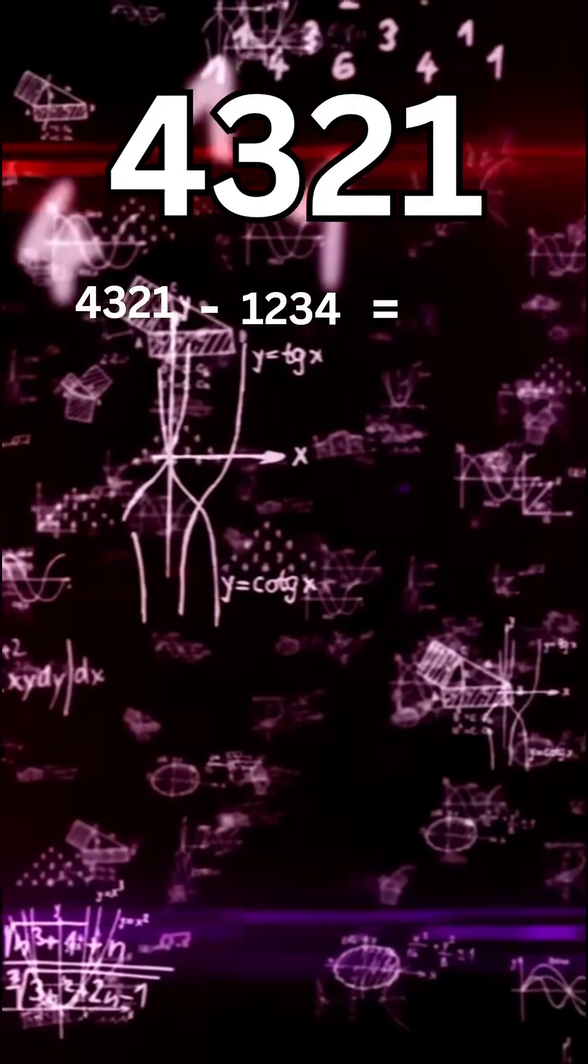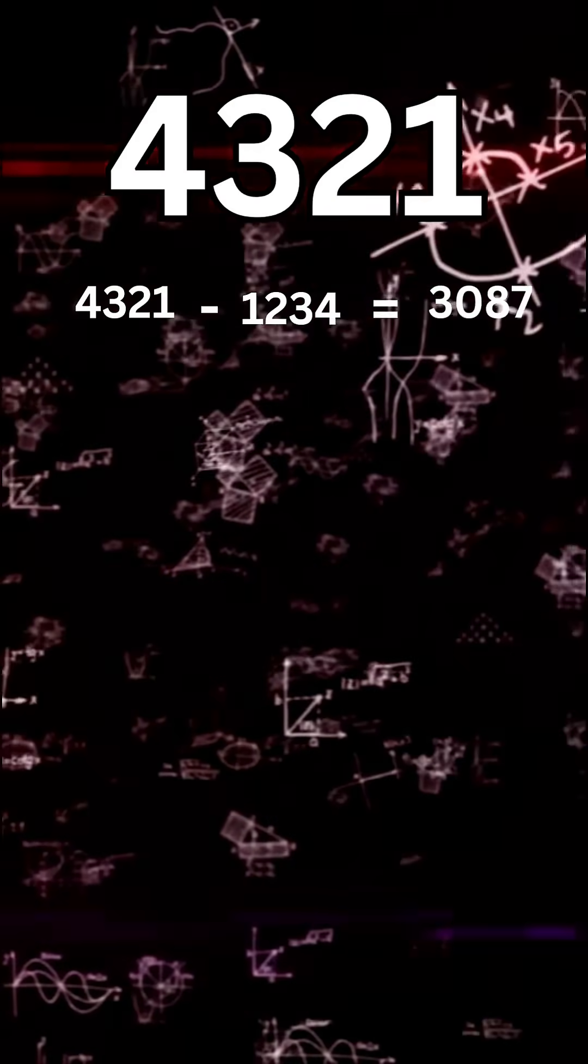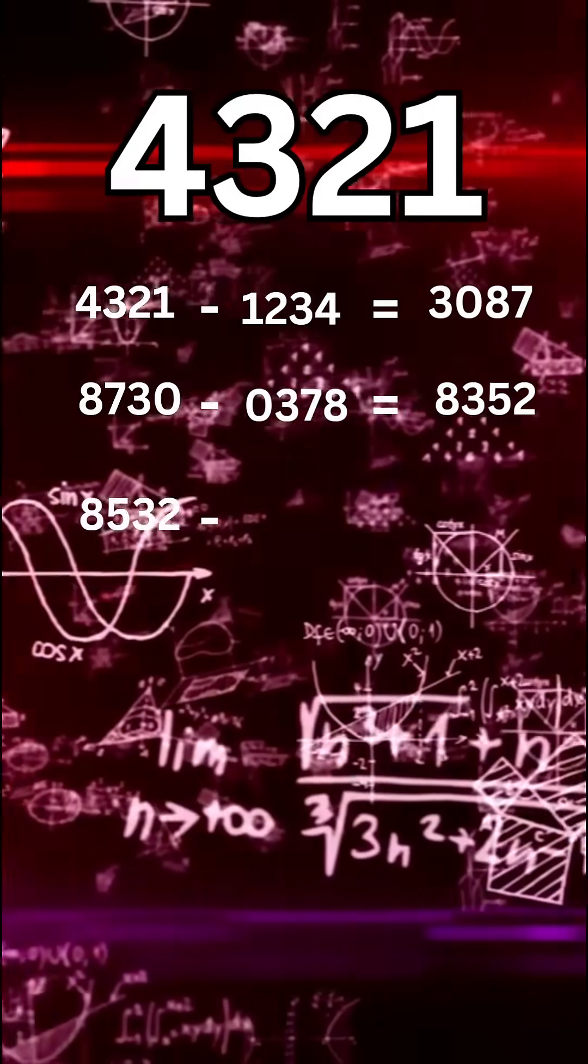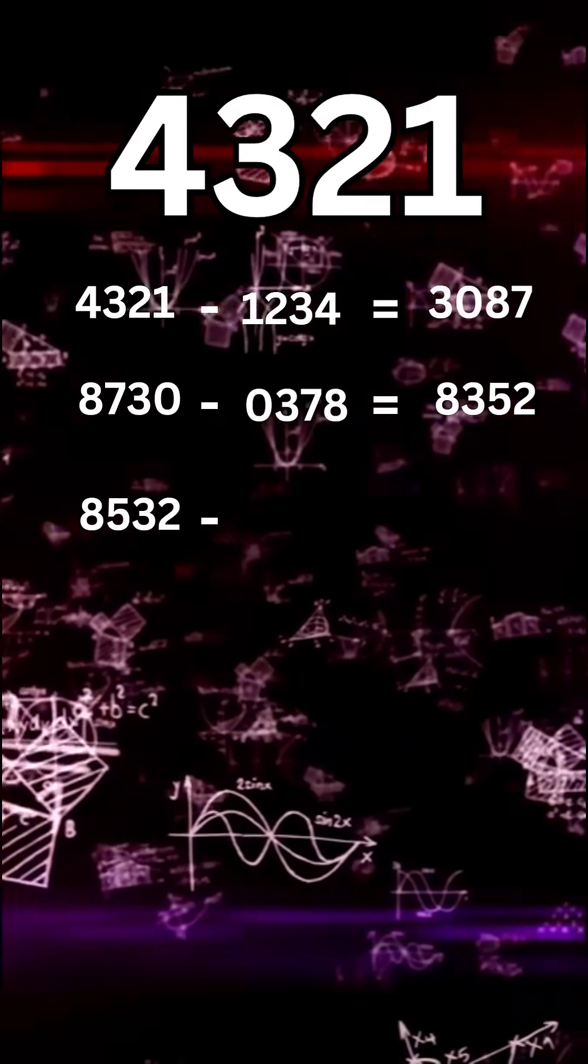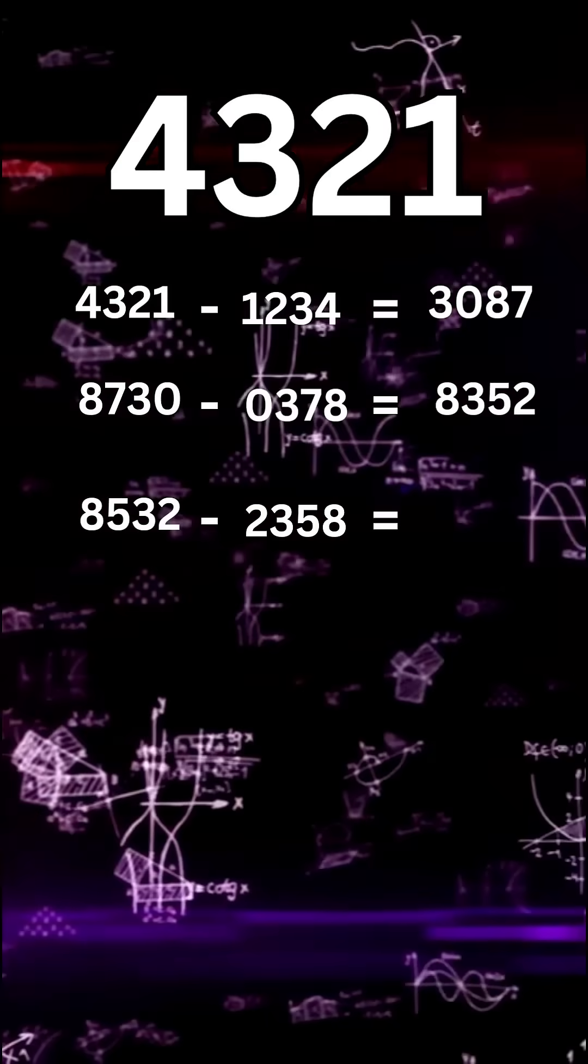Suppose number is 4321. Highest as 4321 minus lowest 1234 equals 3087. Repeat. 8730 minus 0378 equals 8352. 8532 minus 2358 equals 6174, this is the magical number.